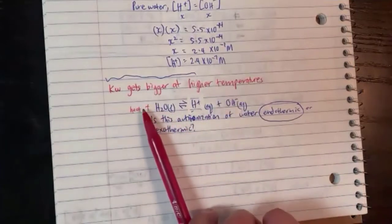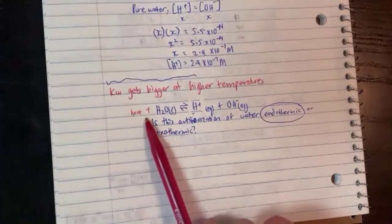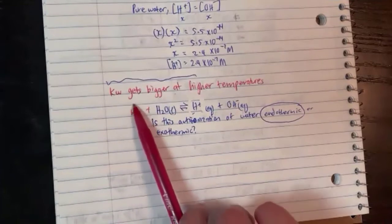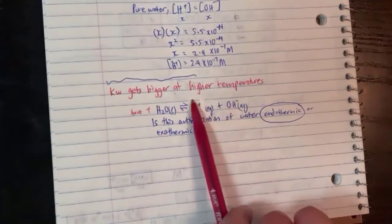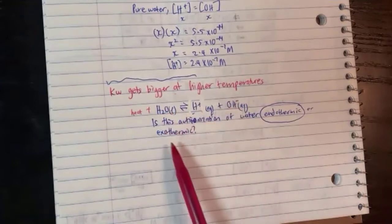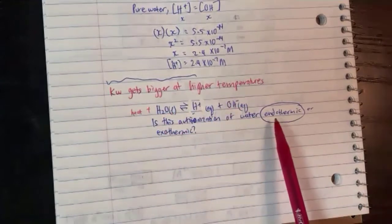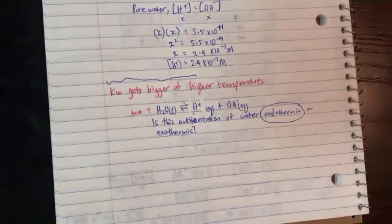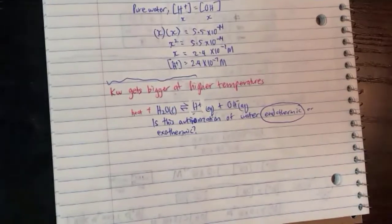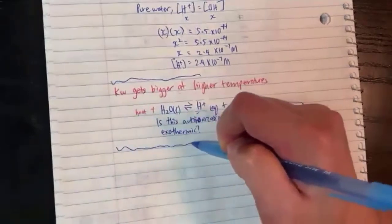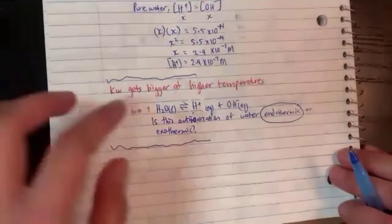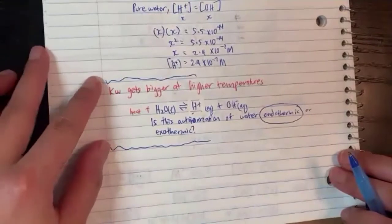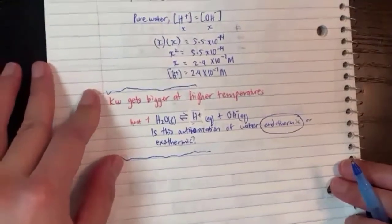The heat was probably on the reactant side, and at higher temperature you raise the heat on the reactant side, it shifts to the right, you get more ions, and that's how your number gets bigger. So it's an endothermic process. We can apply stuff from the previous chapter here — auto-ionization of water is actually an endothermic process.